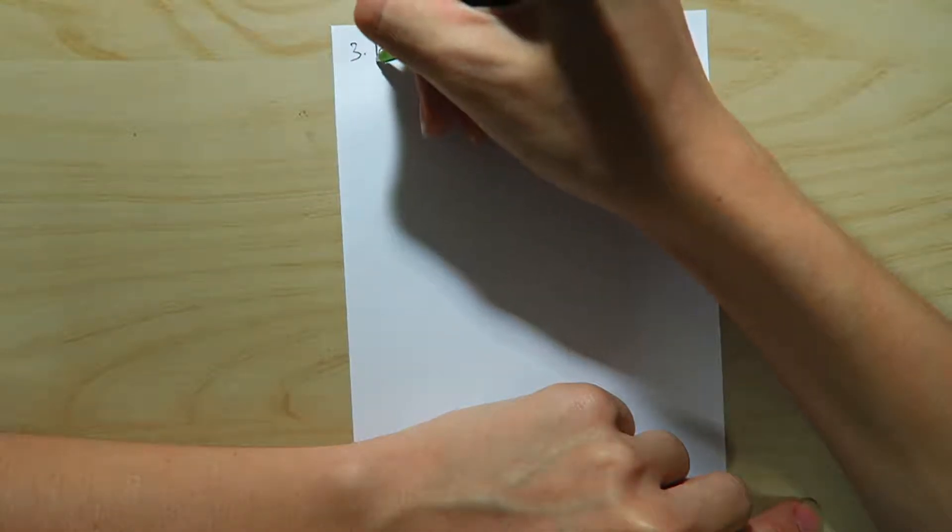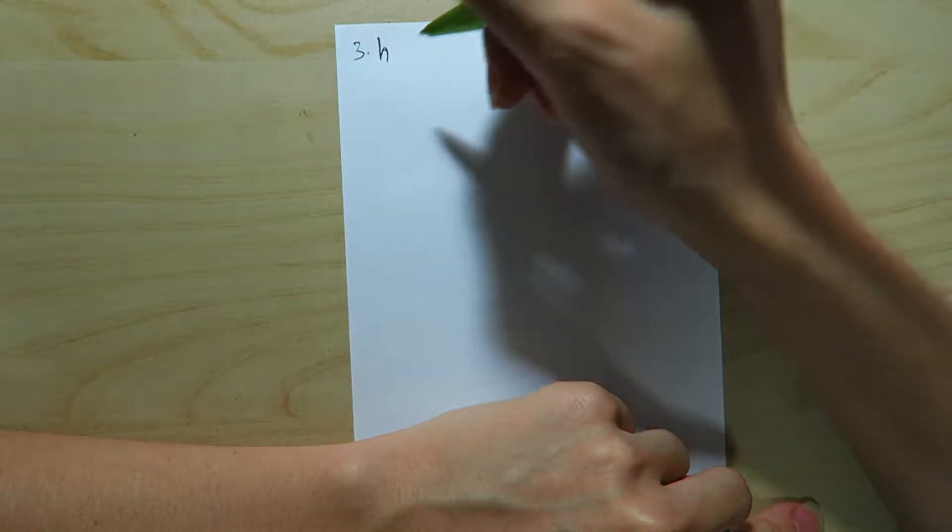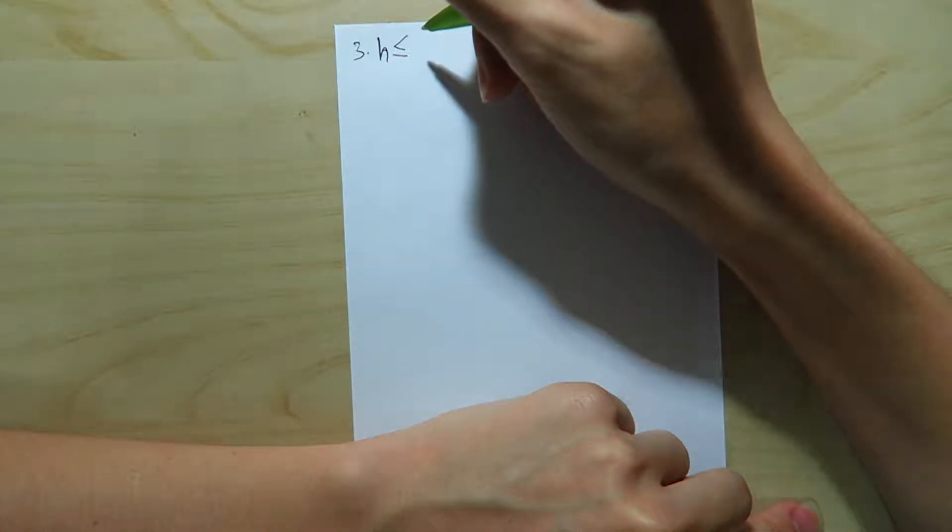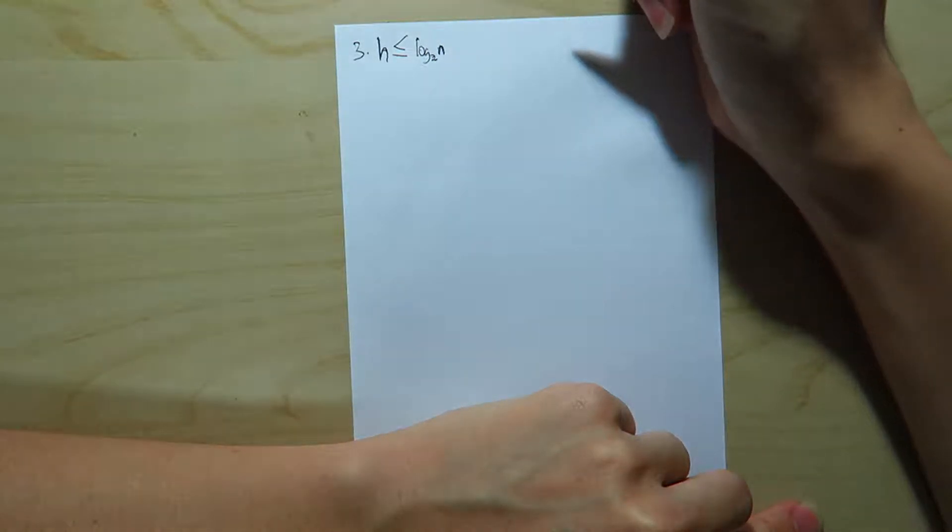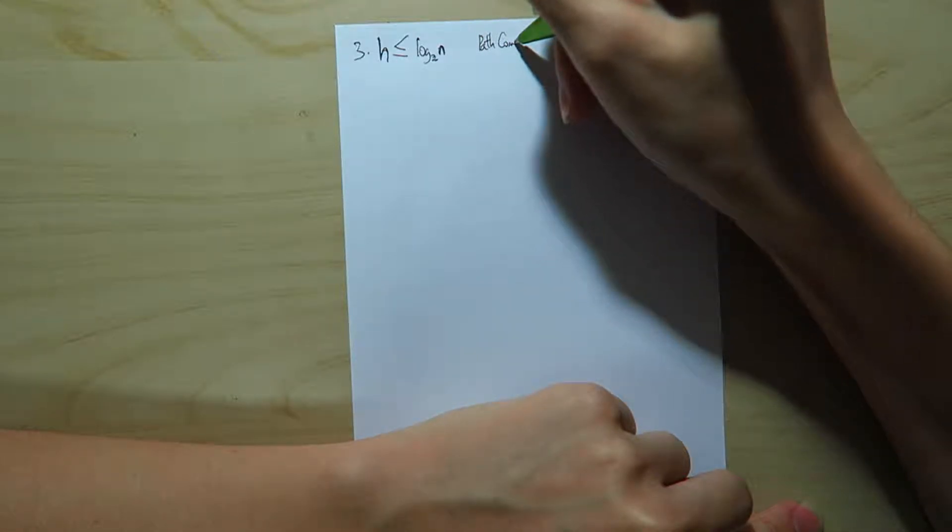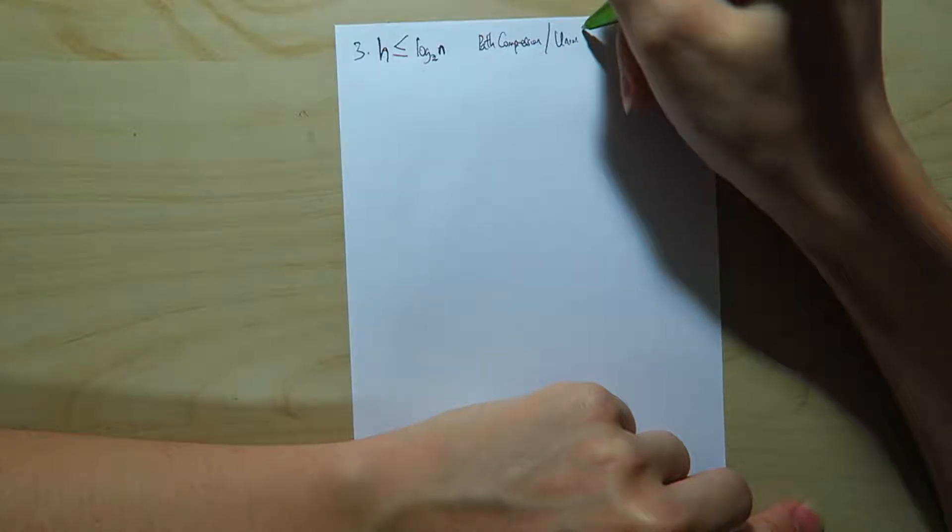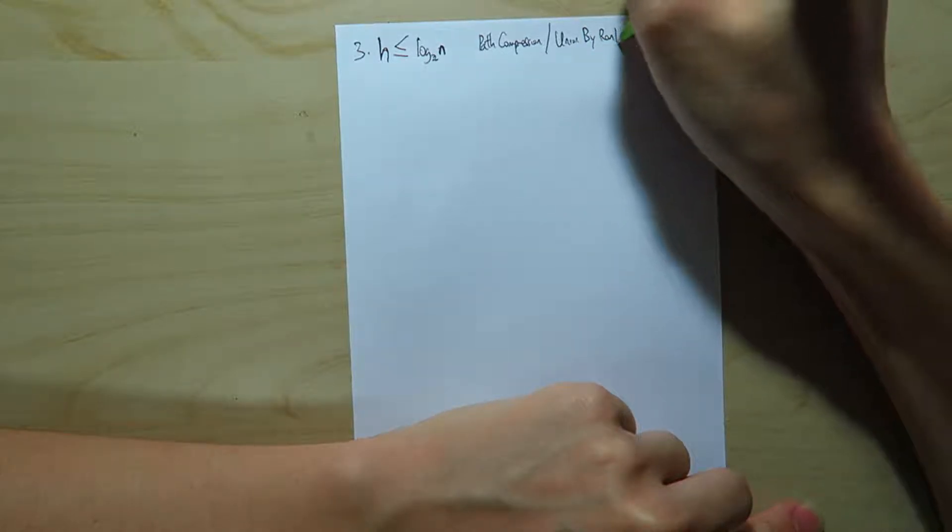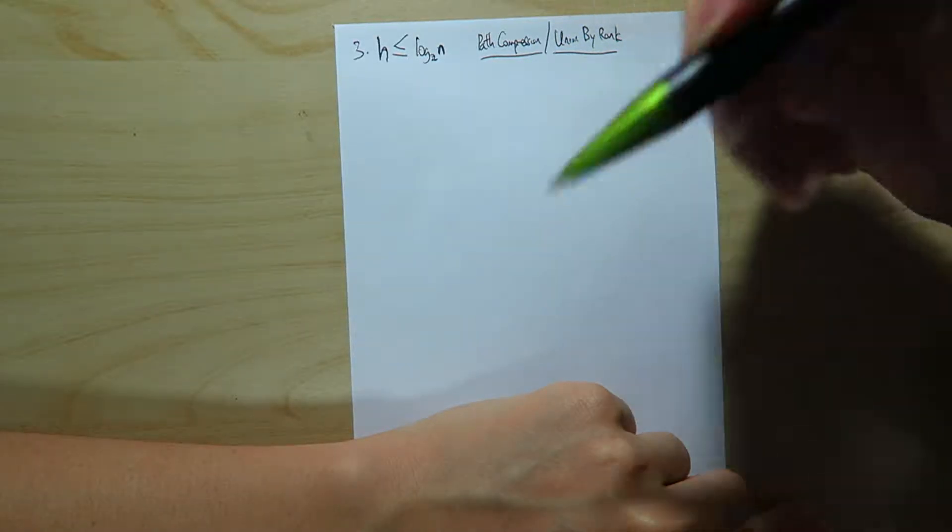So they never really mention h here, but basically the answer is that it's possible to get any height h that is less than or equal to log to n. And this is assuming that we use both heuristics of path compression as well as union by rank. So these two heuristics are both used. And how will we do this?